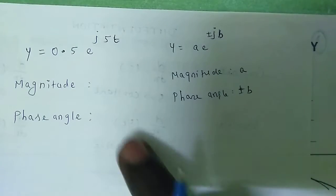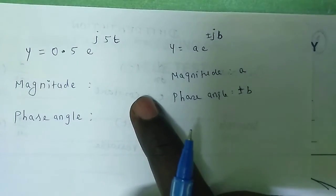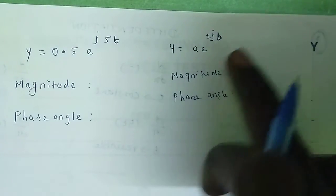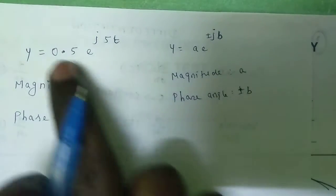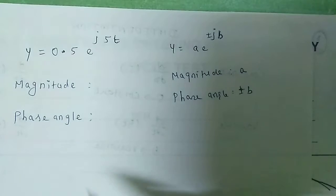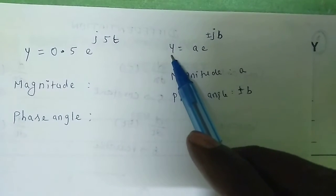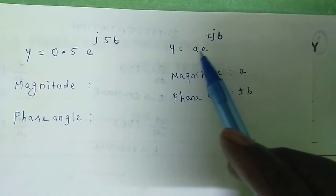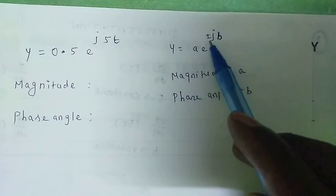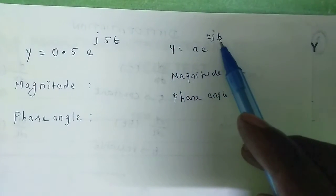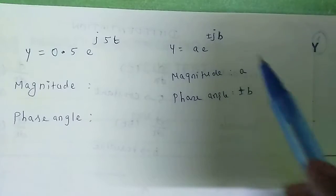Hi students, let's see how to calculate the magnitude and phase angle for the given function. Here is a general function: y is equal to a into e to the power of plus or minus jb.